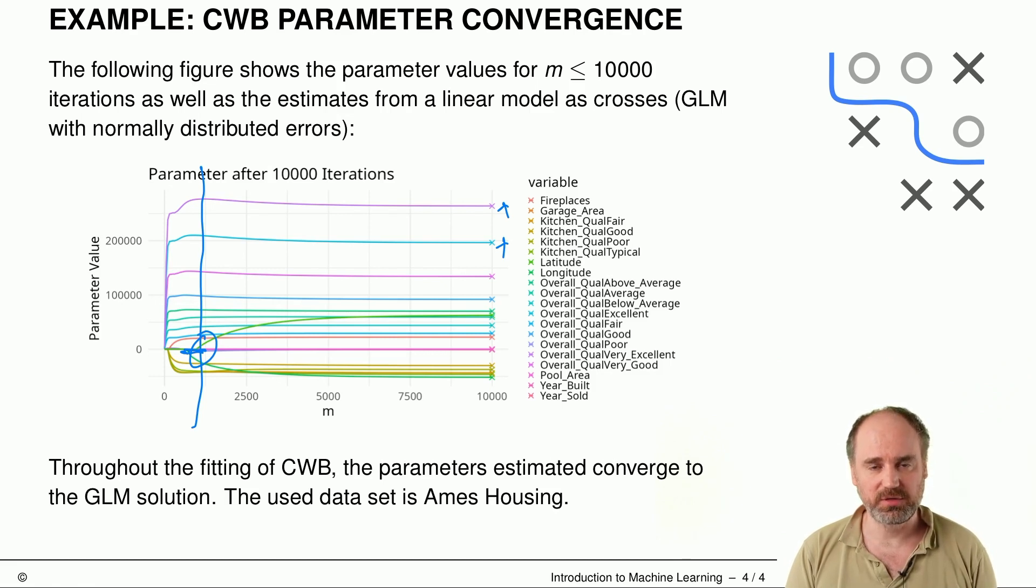Usually this is done by not really looking at in-sample loss but rather by looking at an out-of-sample validation set, and then if loss doesn't really go down enough for us we would stop. Or if we really prefer a sparser model we could stop even before, but that would be a little bit less usual.